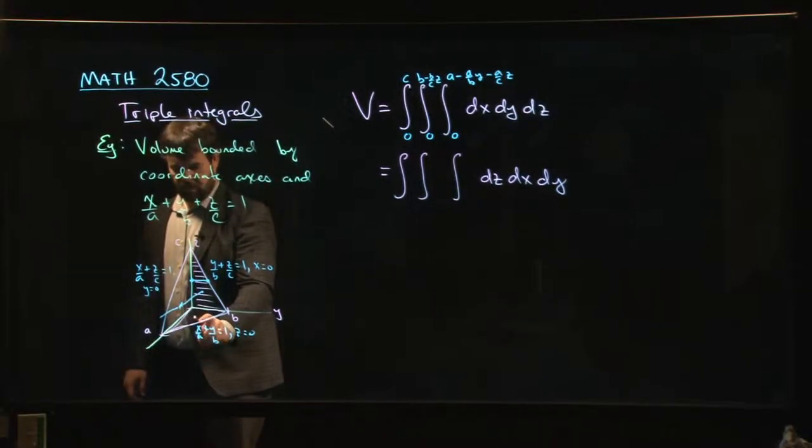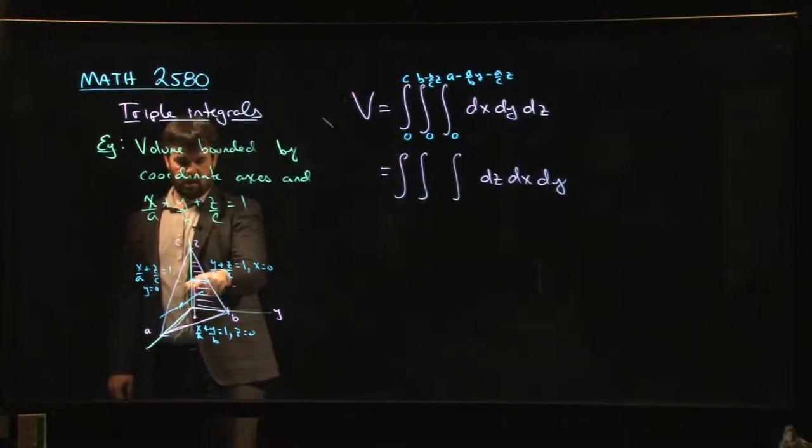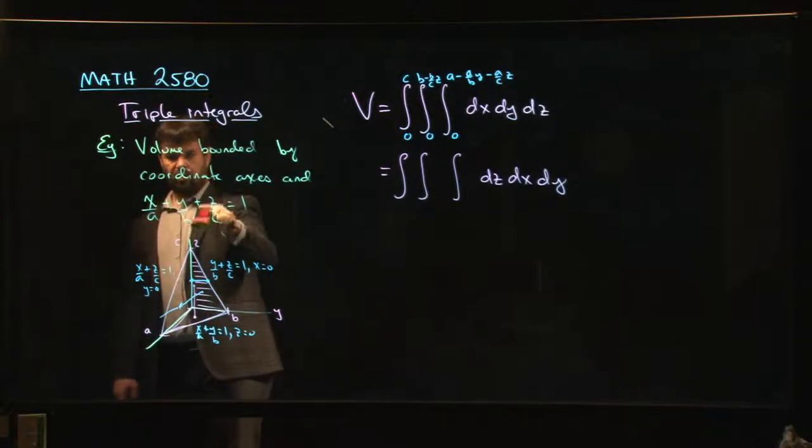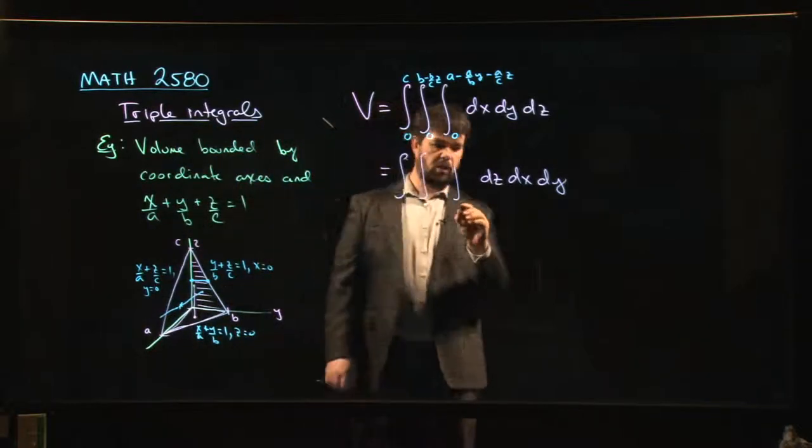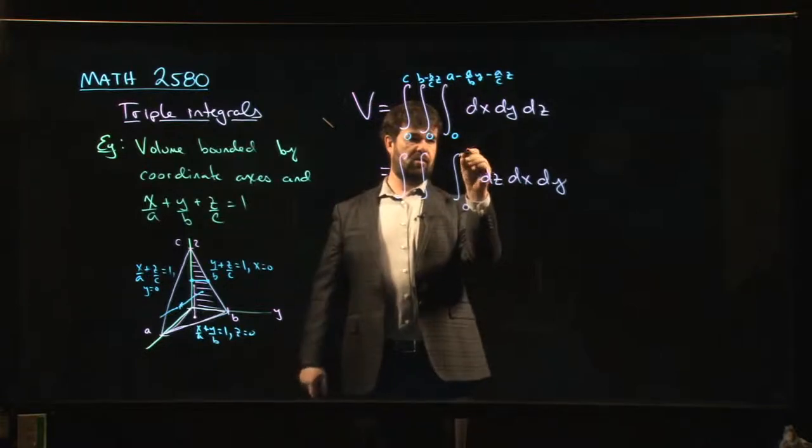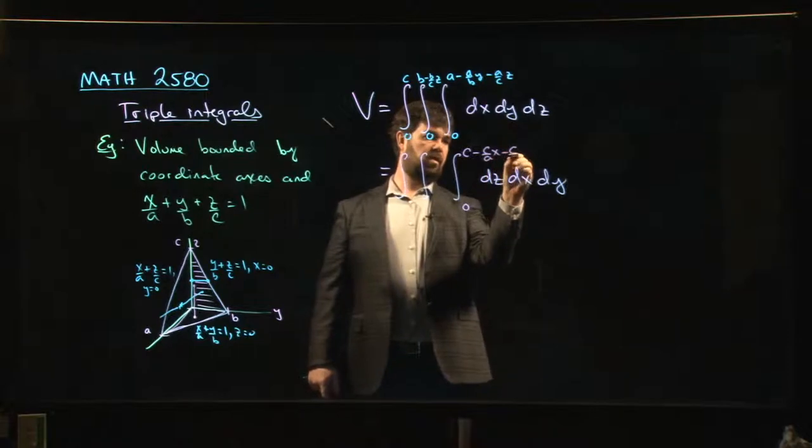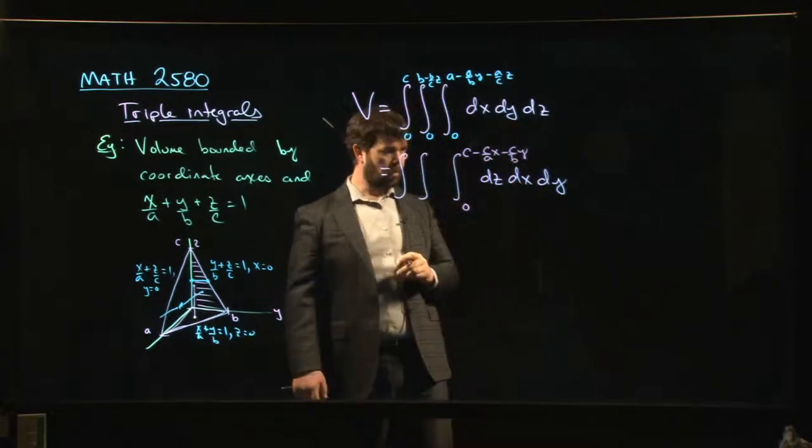Well, I enter the tetrahedron when z equals 0, when I hit the bottom face, and I go up and I exit the tetrahedron when I reach the front face, this face that's at an angle. And of course, I know what my z value is for a given x and y. I know what my z value is when I intersect that plane. Given x and y, I solve for z. So z would start at 0. If I solve z for x and y, what am I going to get? I'm going to get c - (c/a)x - (c/b)y.